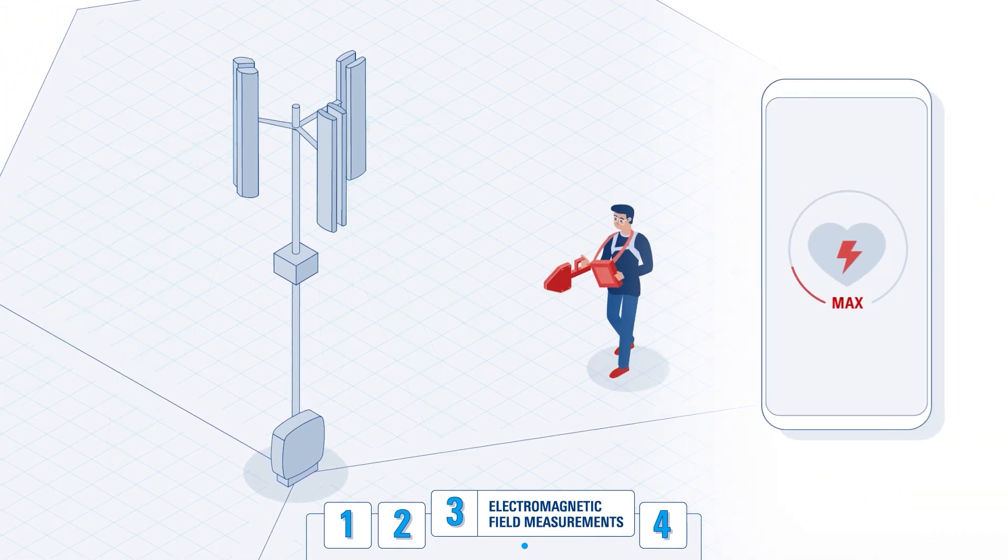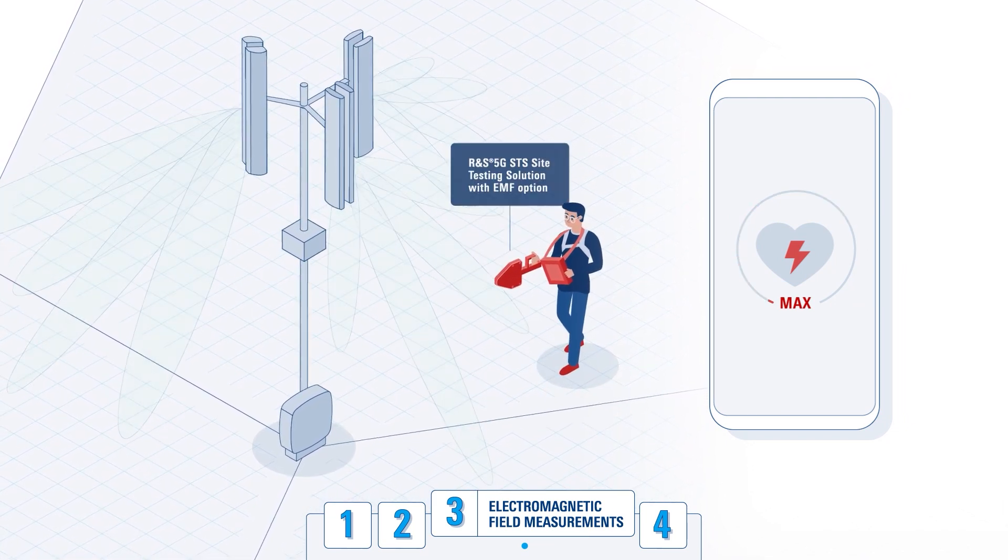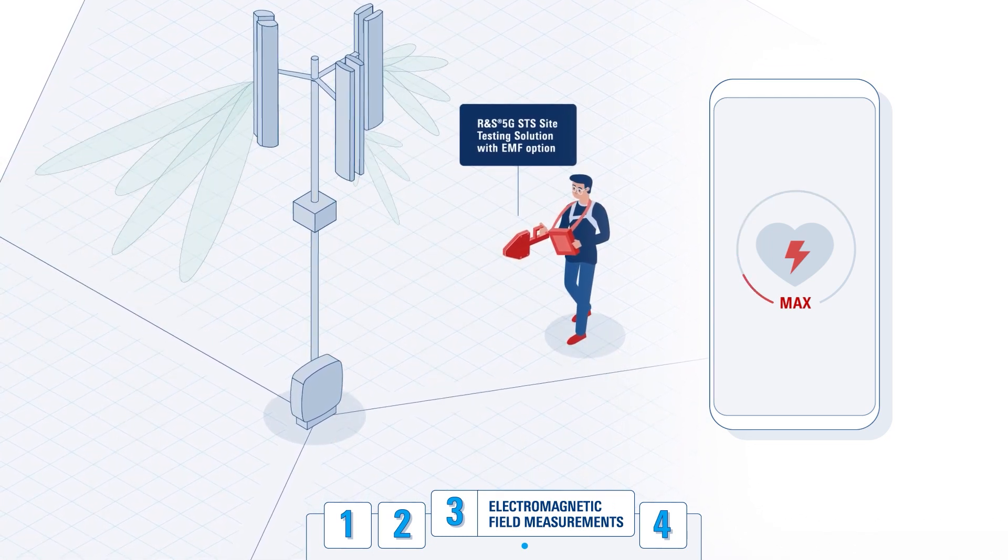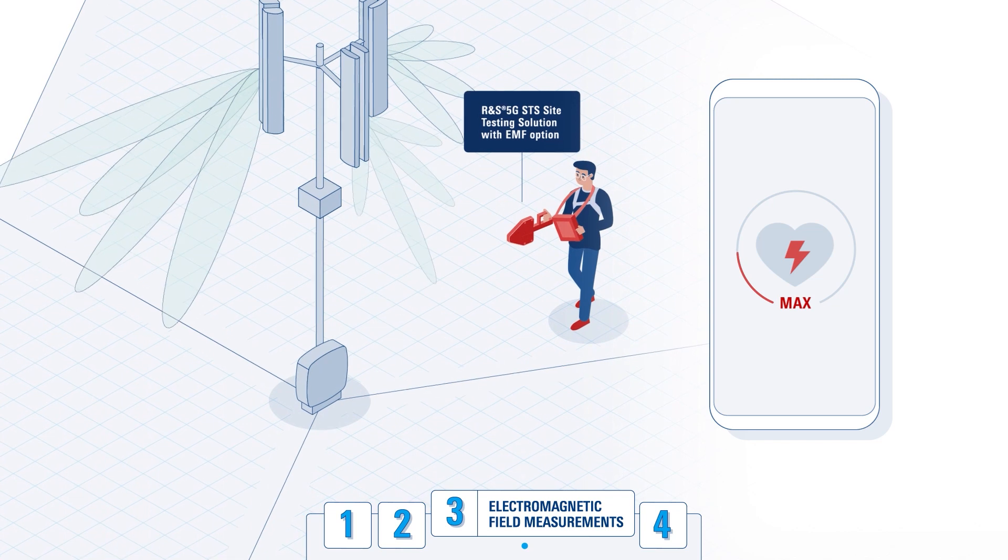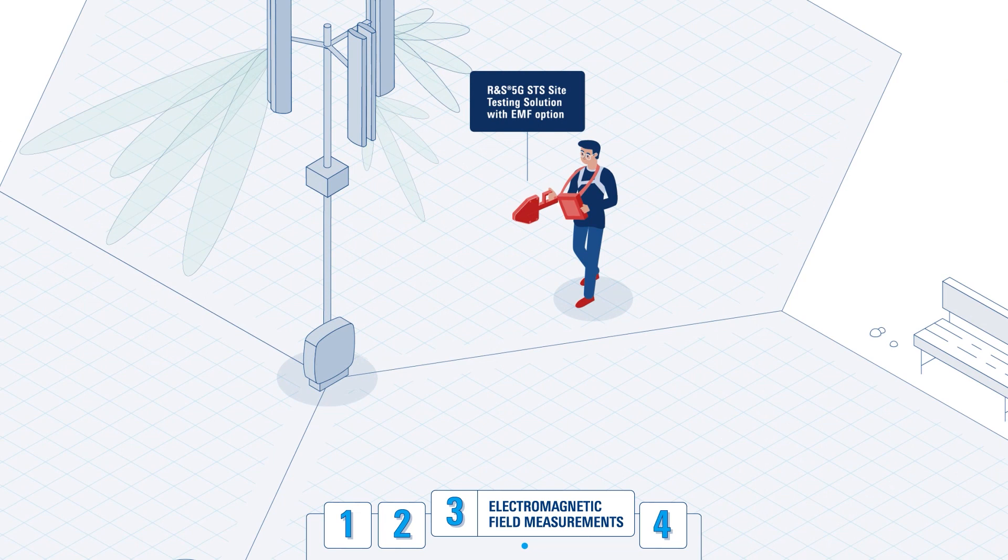Another important aspect is ensuring that the total radiated power and electromagnetic field strength is below the defined threshold. With 5G EMF measurements, you can determine the electromagnetic field strength using the right part of the 5G signal, preferably using the code-selective technique.